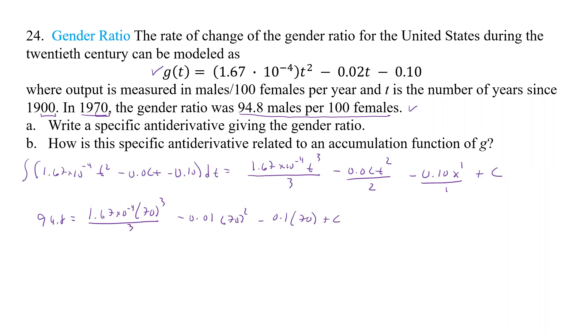So now we just have to figure that piece out. So we have 1.67 times 10 to the negative 4, and after that, we have times 70 to the third, and then divided by 3 minus 0.01 times 70 squared minus 0.1 times 70.